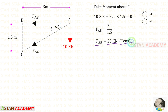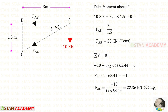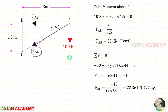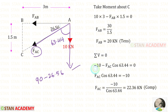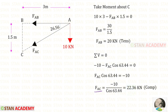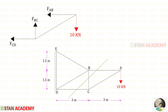For FAB we get a positive value, which means it is tensile. Now let us apply the rule sigma V equals 0. The force 10 is acting downwards, so it will be negative. Since FAC is inclined, we have to make it vertical. To do that, we need 90 minus 26.56, which gives 63.44°. Since FAC is acting downwards, it will be negative and we multiply by cos 63.44°. For FAC we get a negative value, meaning it is compressive.